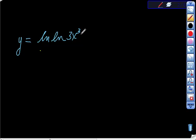Now I didn't do it in different colors, but I just want to show you I'm doing the same thing. I'm going to take the derivative of this part. So y prime, the derivative, is equal to 1 over the inner function. So ln 3x cubed.